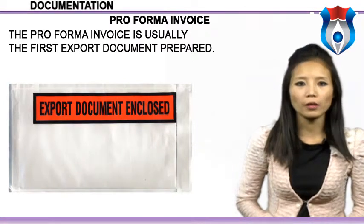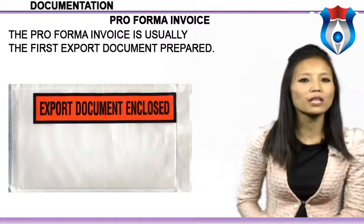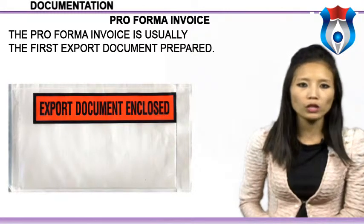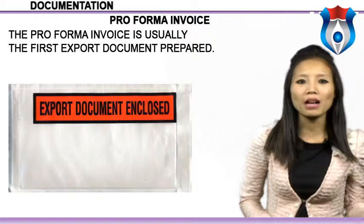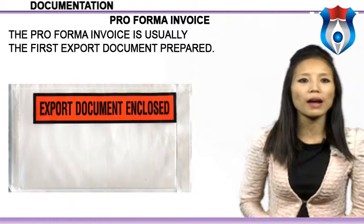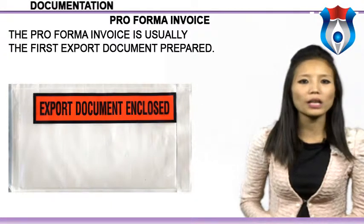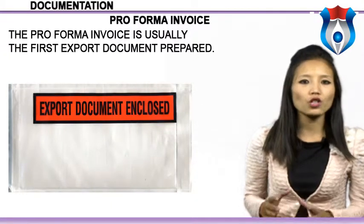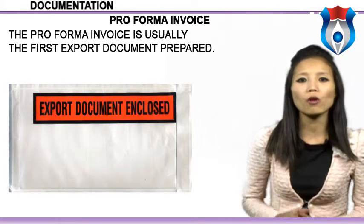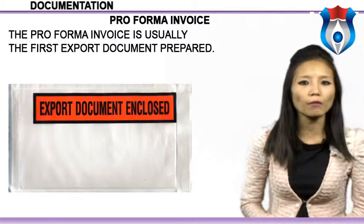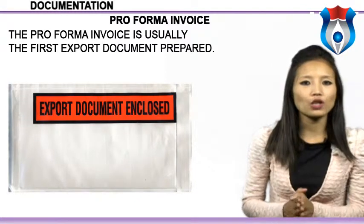Let us now move to our next topic: the Pro Forma Invoice. The Pro Forma Invoice is usually the first export document prepared. It is generated by the exporter in response to an opportunity for export business, often from a trade lead, whether from an unsolicited direct inquiry or as follow-up from a trade event. Virtually nothing is accomplished in an export transaction without the issuance and acceptance of a Pro Forma Invoice. It can be either a formal or informal document, depending on the requirements of the destination country.